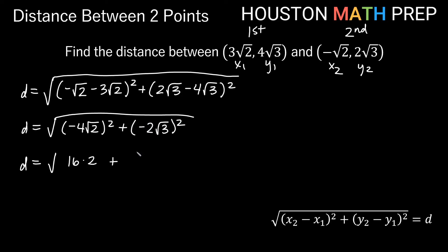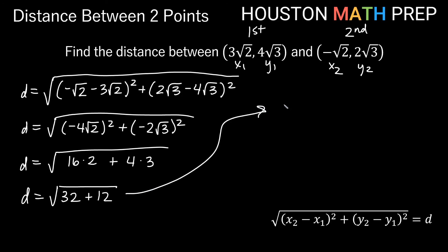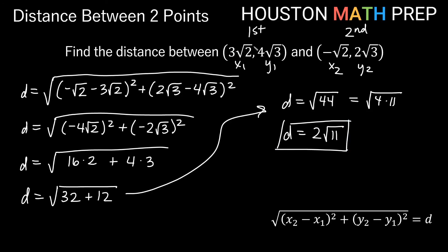Adding inside the root: 32 plus 12 gives the square root of 44. We can simplify: the square root of 44 equals the square root of 4 times 11. The square root of 4 is 2, so we pull that out front, leaving 11 inside. Our distance is 2 square root 11. Hopefully these examples have helped you with finding distance and practicing the distance formula. Thanks for watching — we'll see you in the next video.